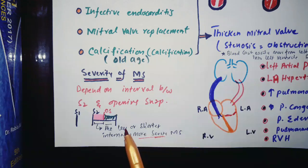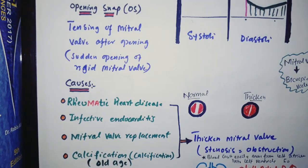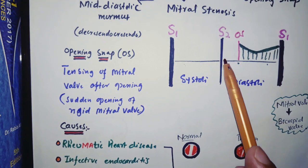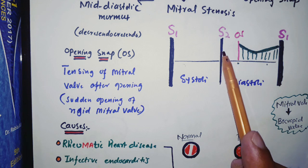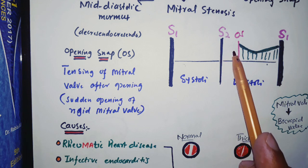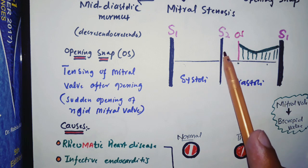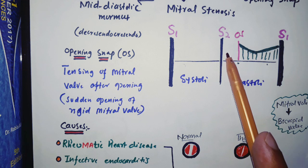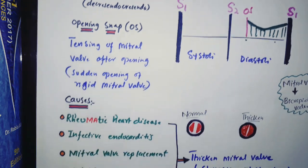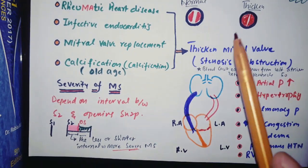The severity of mitral stenosis actually depends on the length — or interval — between S2 and the opening snap. As you can see, this is S2 and this is the opening snap. If the opening snap moves closer to S2, that duration becomes shorter. The shorter this interval, the more severe the mitral stenosis.